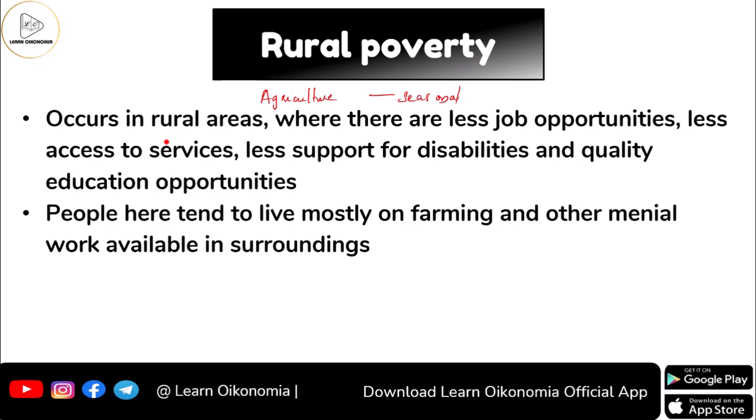Access to services in rural areas is limited compared to urban areas. Support for disabilities is also very limited, and the quality of education available in rural areas is much lower when compared to urban areas. People are mostly trapped in farming and other primary sector activities, where other work environments are very limited. This leads to seasonality of jobs, resulting in unemployment situations for most part of the year, which causes poverty.